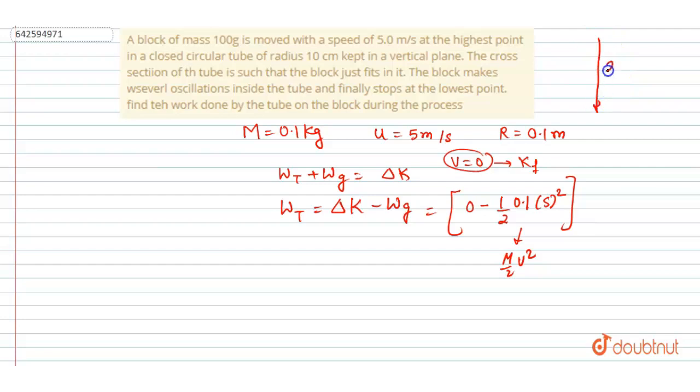Now work done by gravity - it moved downward, right? 2r is the distance moved by it. So I will write 2 × 0.1 is the mass, g is 10, and the radius is 0.1. So this 0.1 and this 10 will get cancelled out and the work done by gravity will be 0.2.